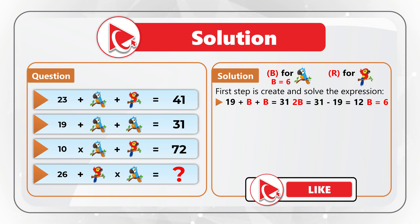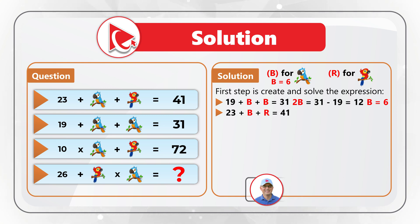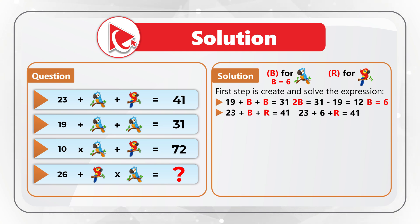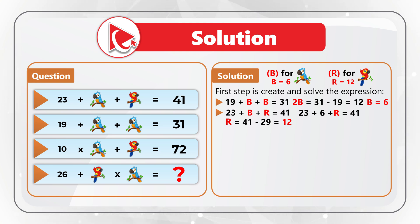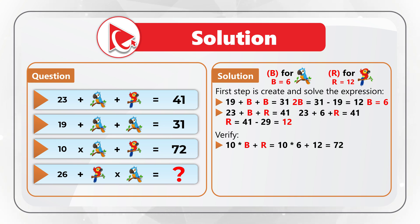Knowing b = 6, we solve the first expression: 23 + b + r = 41, so 23 + 6 + r = 41, giving r = 41 − 29 = 12. Technically we don't even need the third expression, but let's use it to verify: 10 × b + r = 10 × 6 + 12 = 60 + 12 = 72. Correct!